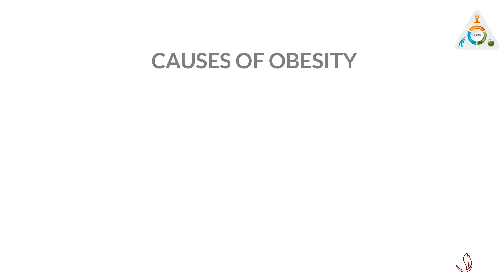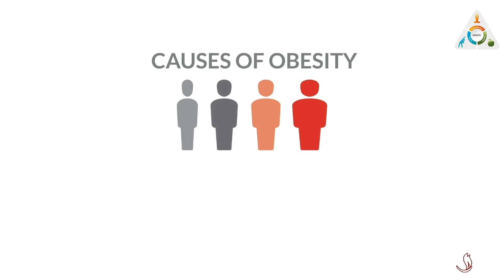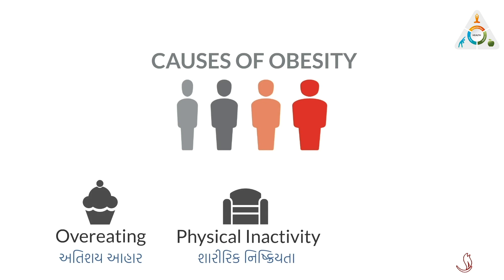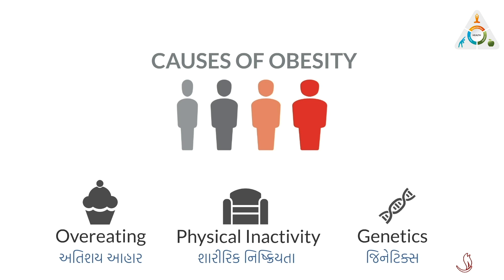Obesity does not happen overnight — it develops gradually over time as a result of poor diet and lifestyle choices. Firstly, overeating: this includes eating too many foods which are high in fat and sugar, eating larger portions than you need, and eating more frequently than required. Physical inactivity: if you are not active enough, you do not use the energy provided by the food you eat, and the extra energy you consume is stored by the body as fat. Genetics may also play a role in predisposing some people to obesity, and therefore it is even more important to look after our health. The bottom line is that we put on weight when we regularly put more calories into our body than we use, and over time that extra energy is stored by the body as fat.